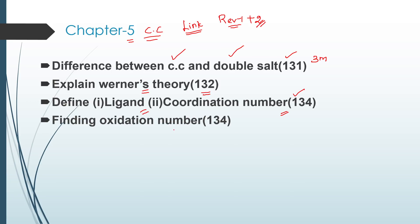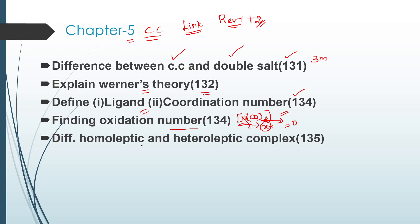Next is finding the oxidation number in a complex — for example, nickel tetracarbonyl. We take the metal and assign charge for the ligand. After that, the difference between homoleptic and heteroleptic complexes on page 135 — these are simple questions.